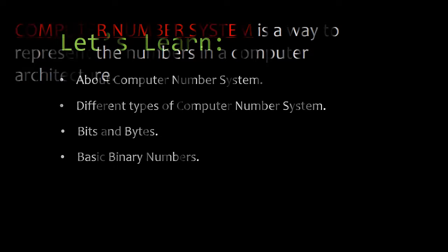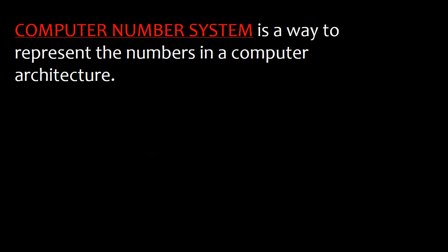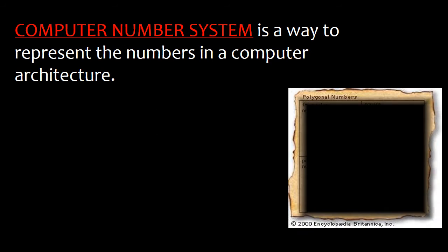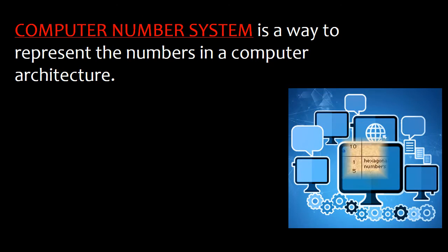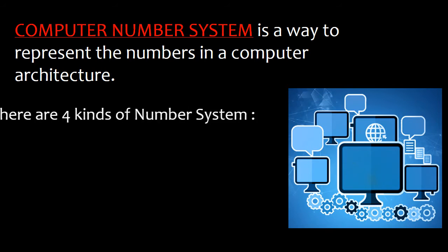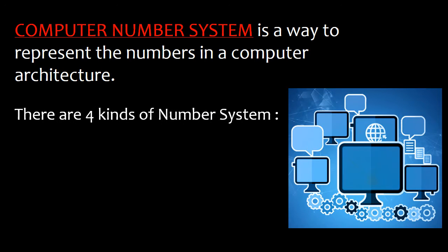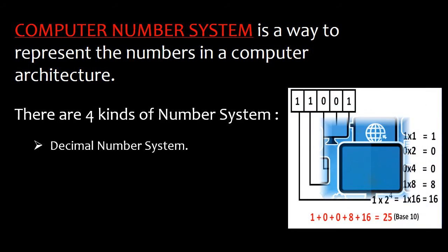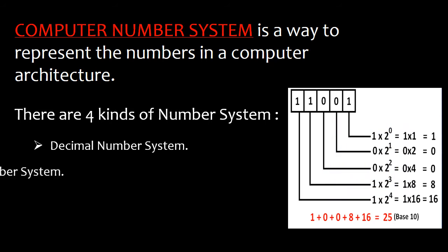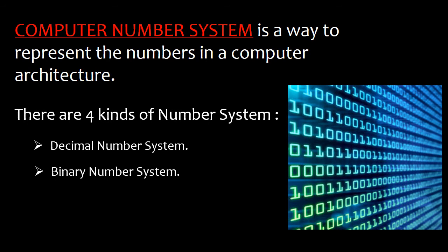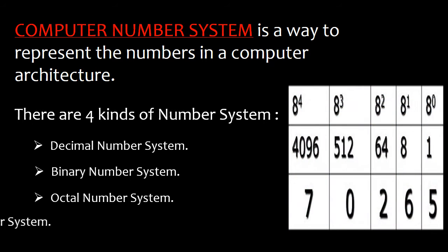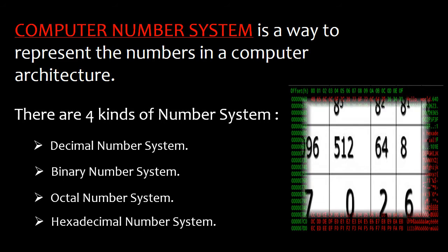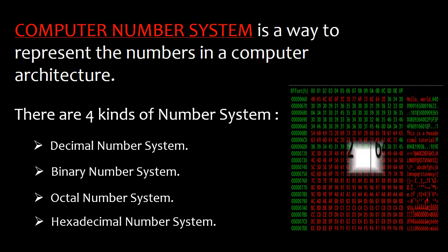A computer number system is a way to represent numbers in a computer architecture. There are four kinds of computer number systems: decimal number system, binary number system, octal number system, and hexadecimal number system.